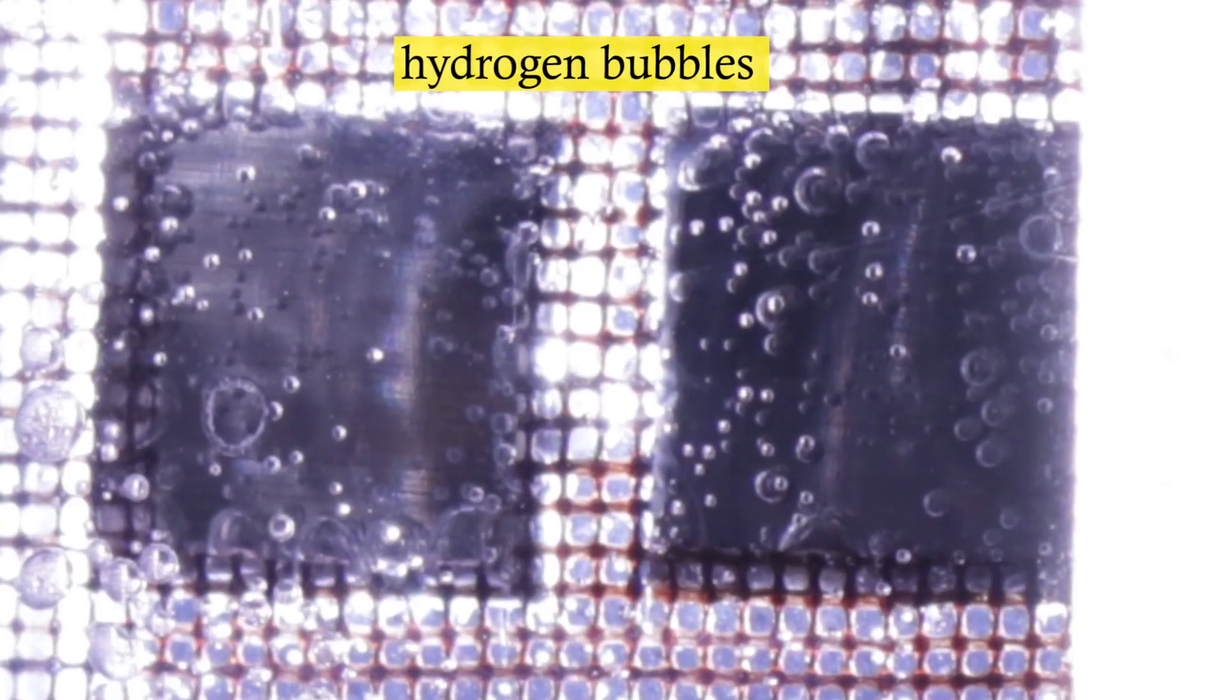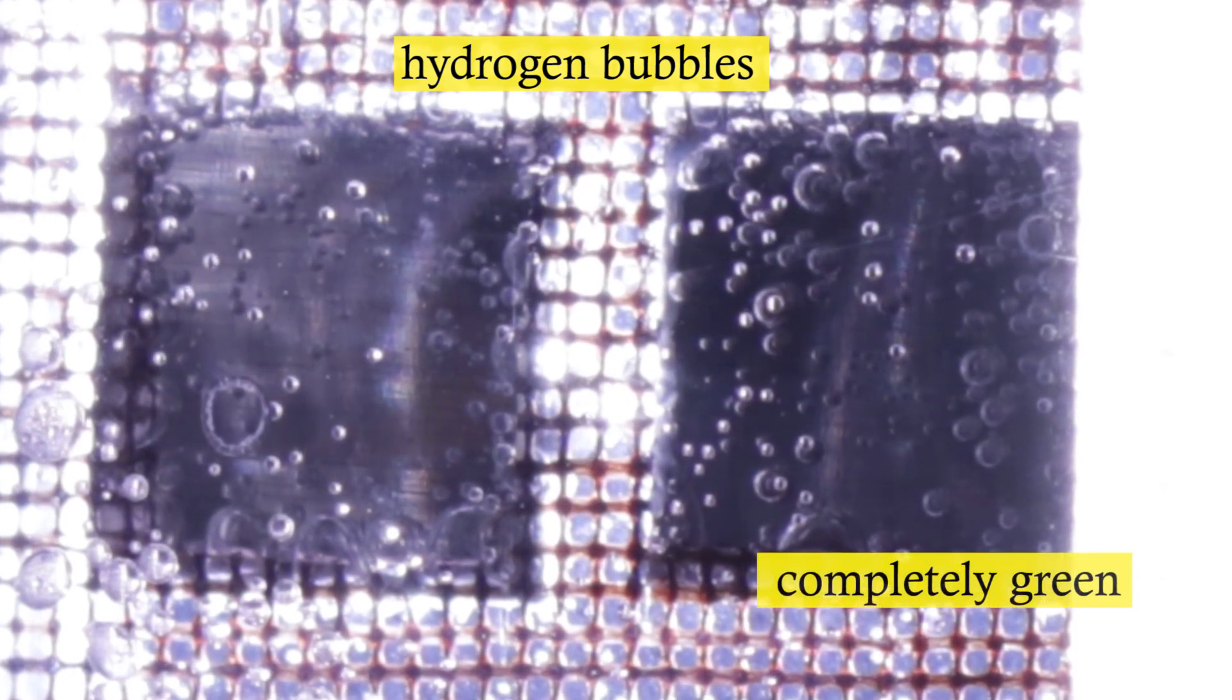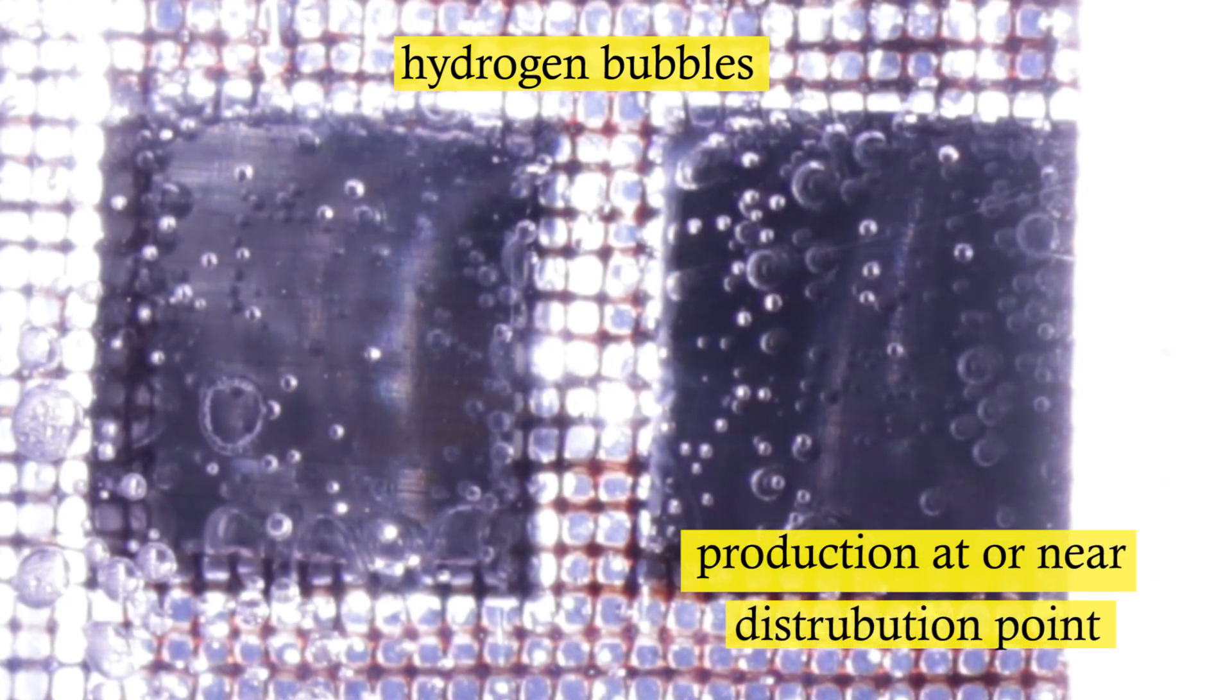While hydrogen production from these solar cells is still not economically on par with the natural gas steam reforming method of hydrogen production, the process is completely green and production can happen at or near the point of distribution without large infrastructure and capital cost.